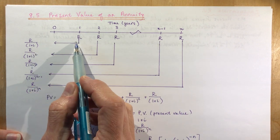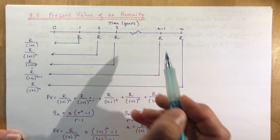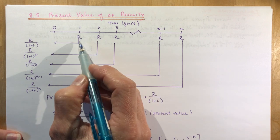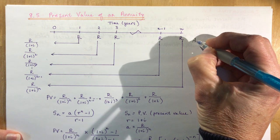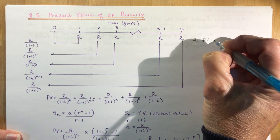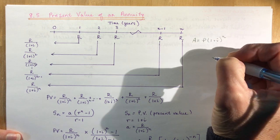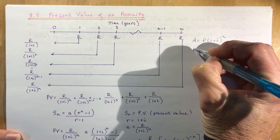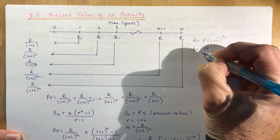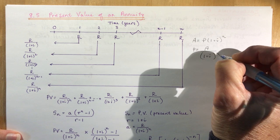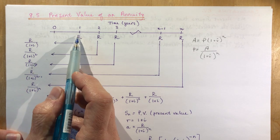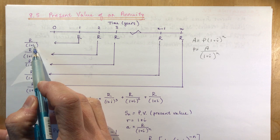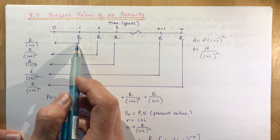I want to know what is the present value of each of these Rs, the regular payment I'm going to bring each one to the present. We used a formula before A = P(1+i)^n and we also rearranged that to solve for P: P = A/(1+i)^n.